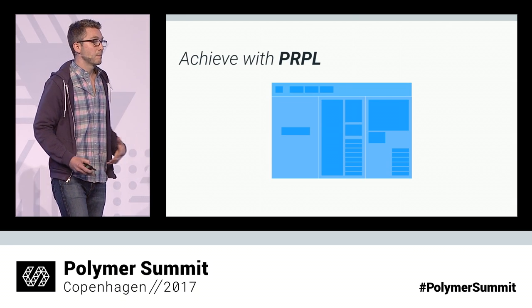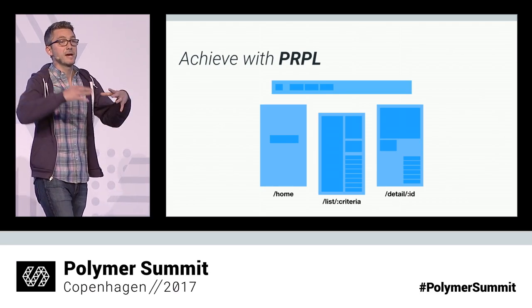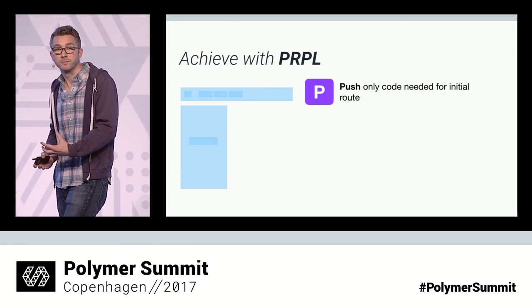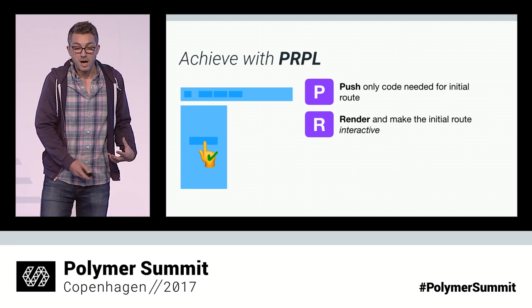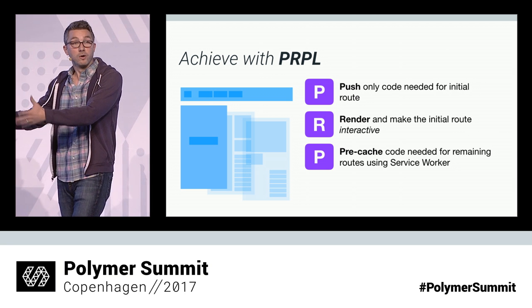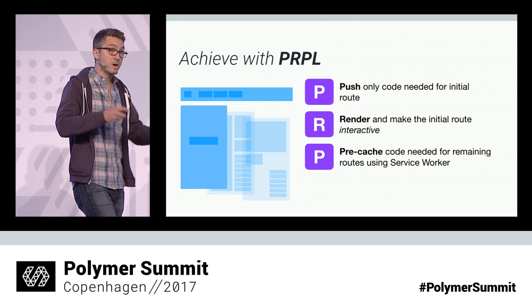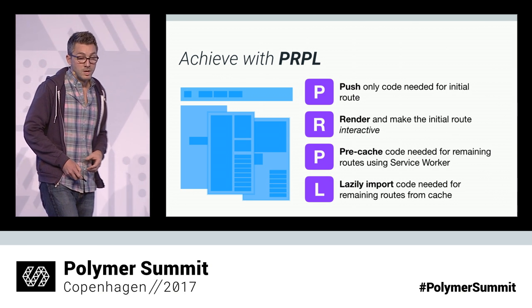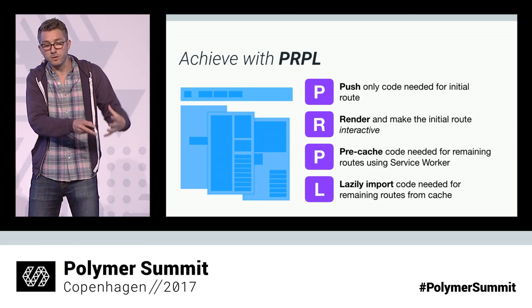Historically, that's been fairly difficult to achieve. This is why on the Polymer team we've been working hard to promote the PRPL pattern, which gives us a straightforward pattern for factoring applications for optimal delivery. In short, we start by factoring our application around decoupled routes that fit together into an interactive experience. Then we push down only the code needed for the initial route with as few round trips as possible — only what the user asked for in their first URL. From there, we render and get that initial route interactive as quickly as possible. Then, while the user is enjoying that route, the service worker can boot up and precache the rest of the application in the background, so when the user moves on, we can lazily import the code for remaining routes right out of the cache. So: Push, Render, Precache, and Lazy Load — PRPL.